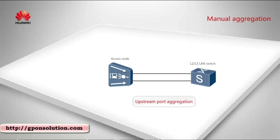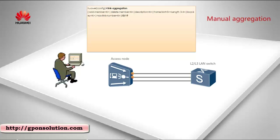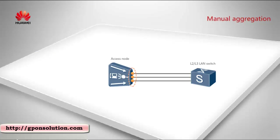We'll use the upstream port aggregation of the access device as an example to describe how to configure manual aggregation. First, select ports for the aggregation group, such as two ports on slot 19 and one port on slot 20. Second, select a packet transmission mode, for example, ingress. You do not need to configure the aggregation mode because it defaults to manual aggregation.